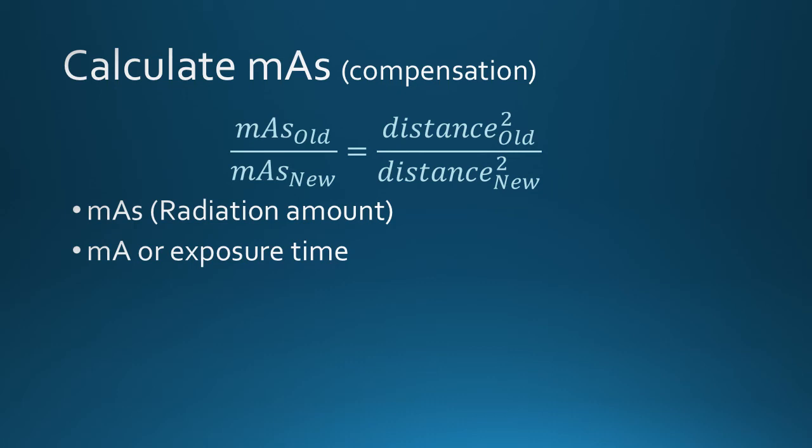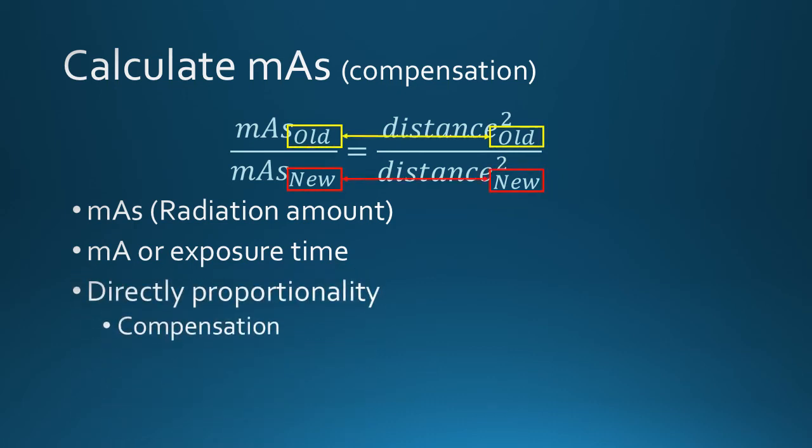The really big difference for this equation is that the new and old elements are directly proportional. The explanation is that this equation compensates for a loss or gain of radiation and image density — to compensate for intensity loss, you increase the MAS, and vice versa.